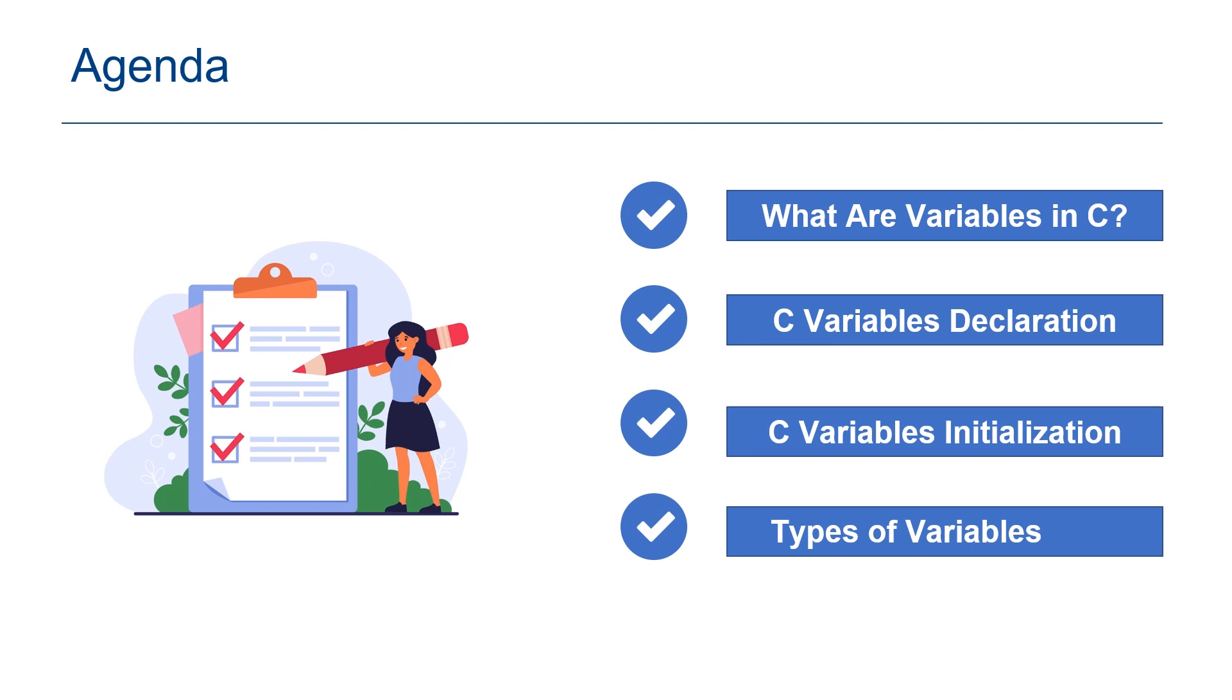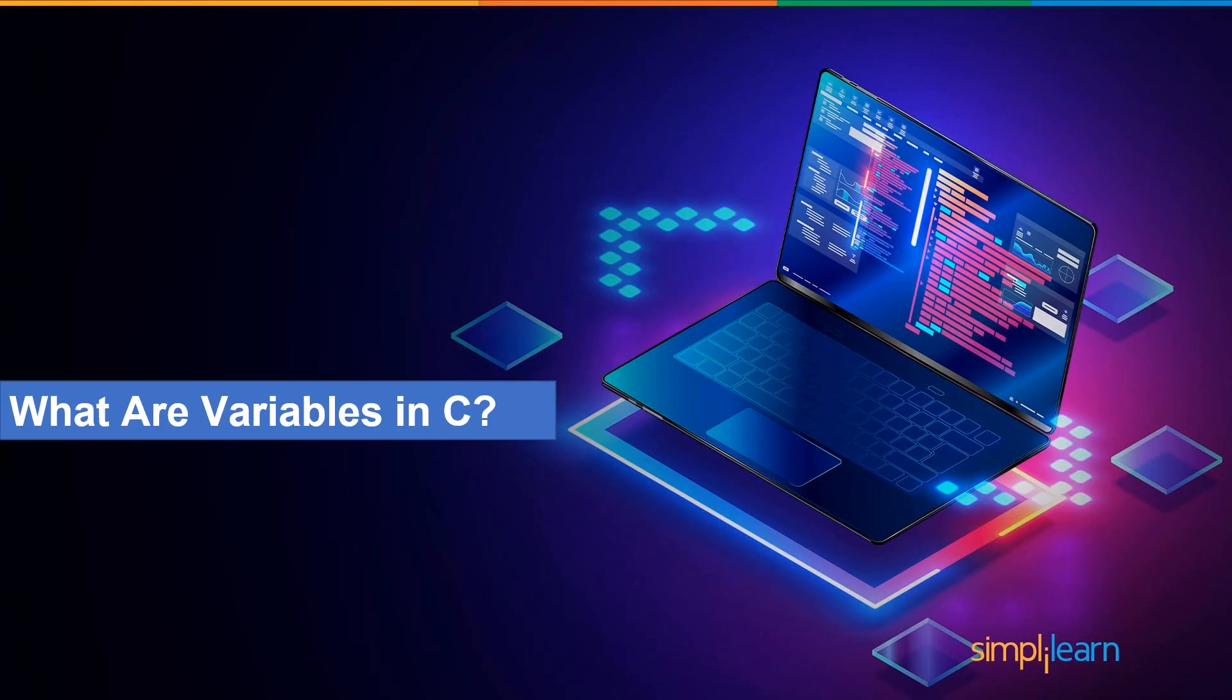Without further ado, let's get started with the agenda for today's session. First, we will understand what are variables in C programming. Next, we will learn how to declare a variable in C and its initialization procedure. And finally, the types of variables in C.